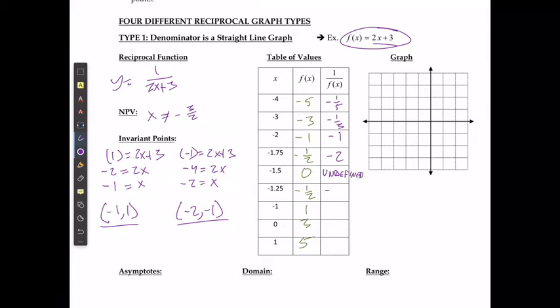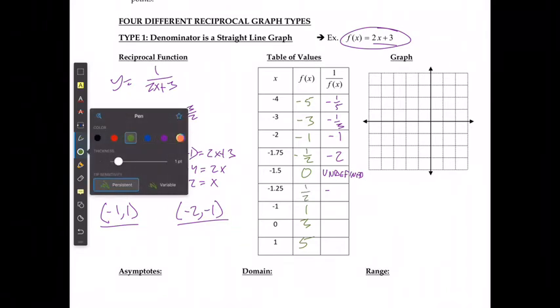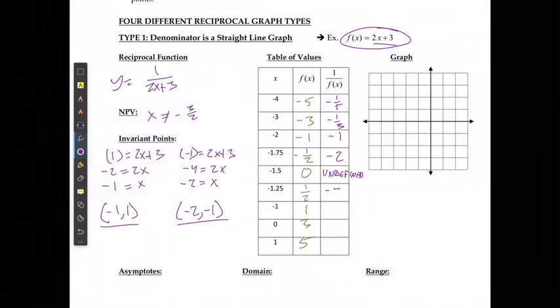This is going to be undefined, this is going to be positive 1 over 2, which is going to give me positive 2, this is going to be 1 over 1, which is just 1, and then positive 1 over 3 and positive 1 over 5.